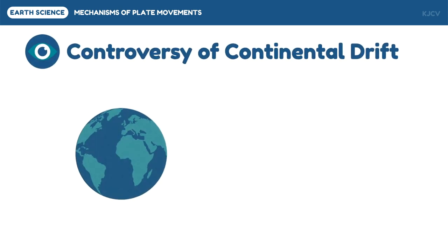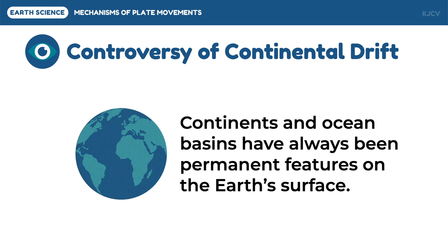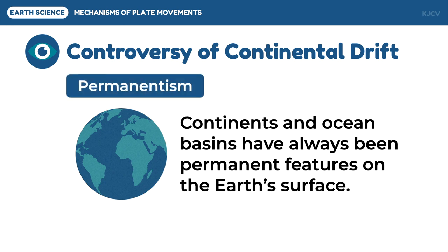The continental drift theory was not widely accepted because of the belief that continents and ocean basins have always been permanent features on the earth's surface. This belief is called permanentism, and it was what was generally believed about global geology before plate tectonics. In spite of the pieces of evidence Wegener mentioned, he failed to provide a clear explanation on the driving force or mechanism of his theory.